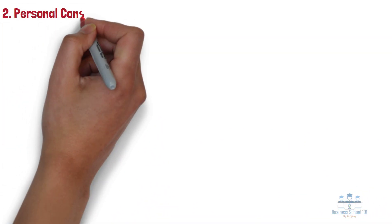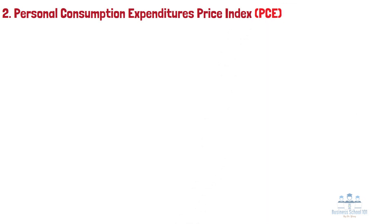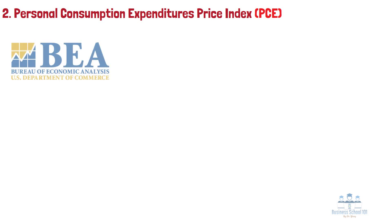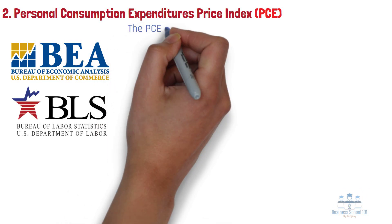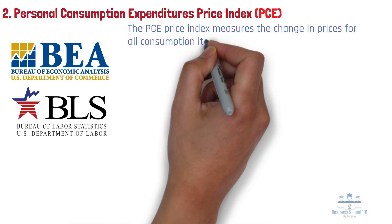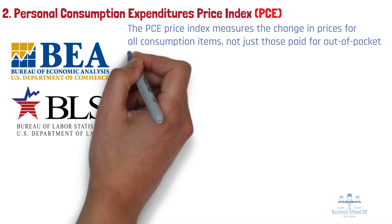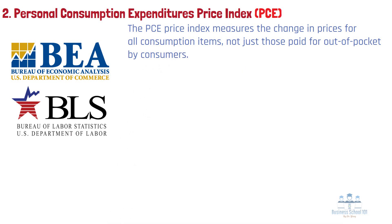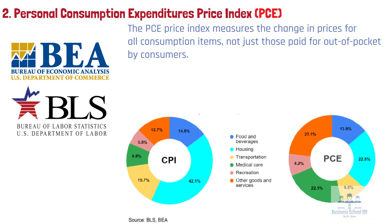Second, the Personal Consumption Expenditures Price Index, or PCE. The PCE Price Index is another measure of inflation, produced by the Bureau of Economic Analysis, or BEA, using data on prices from the Bureau of Labor Statistics, or BLS. The PCE Price Index measures the change in prices for all consumption items, not just those paid for out-of-pocket by consumers. For example, the weight on healthcare in the PCE reflects what consumers pay out-of-pocket for premiums, deductibles, and co-payments, as well as the costs covered by employer-provided insurance, Medicare, and Medicaid. In the CPI, only the direct costs to consumers are reflected.